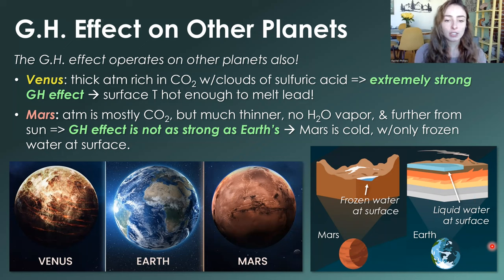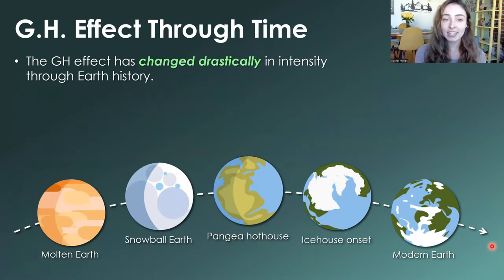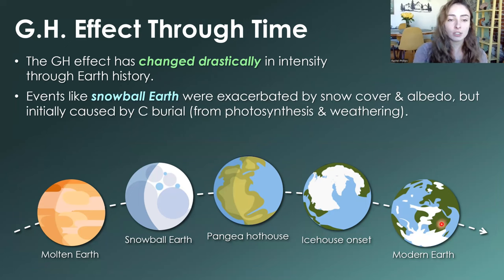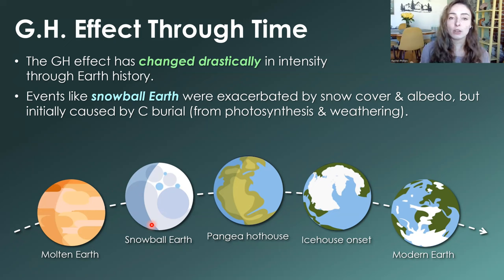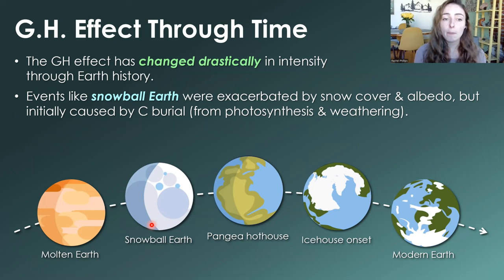Earth is considered in a Goldilocks zone for many things — not just solar input, but its greenhouse effect, atmosphere, and timing throughout history. Even Earth's greenhouse effect has changed drastically in intensity over time. Events like Snowball Earth were exacerbated by snow and ice cover increasing albedo — glaciation events that nearly covered all of Earth in ice were worsened by a feedback mechanism where expanding ice cover blocked more and more incoming solar radiation. These events were initially caused by major carbon burial from photosynthesis and weathering.